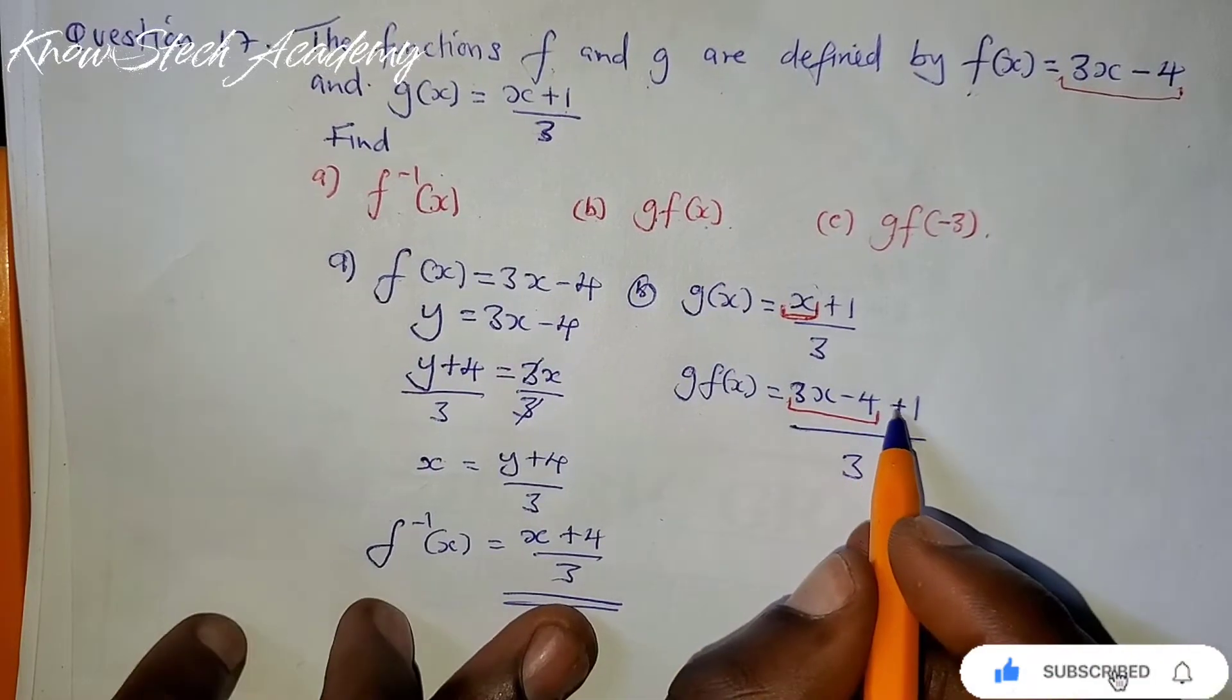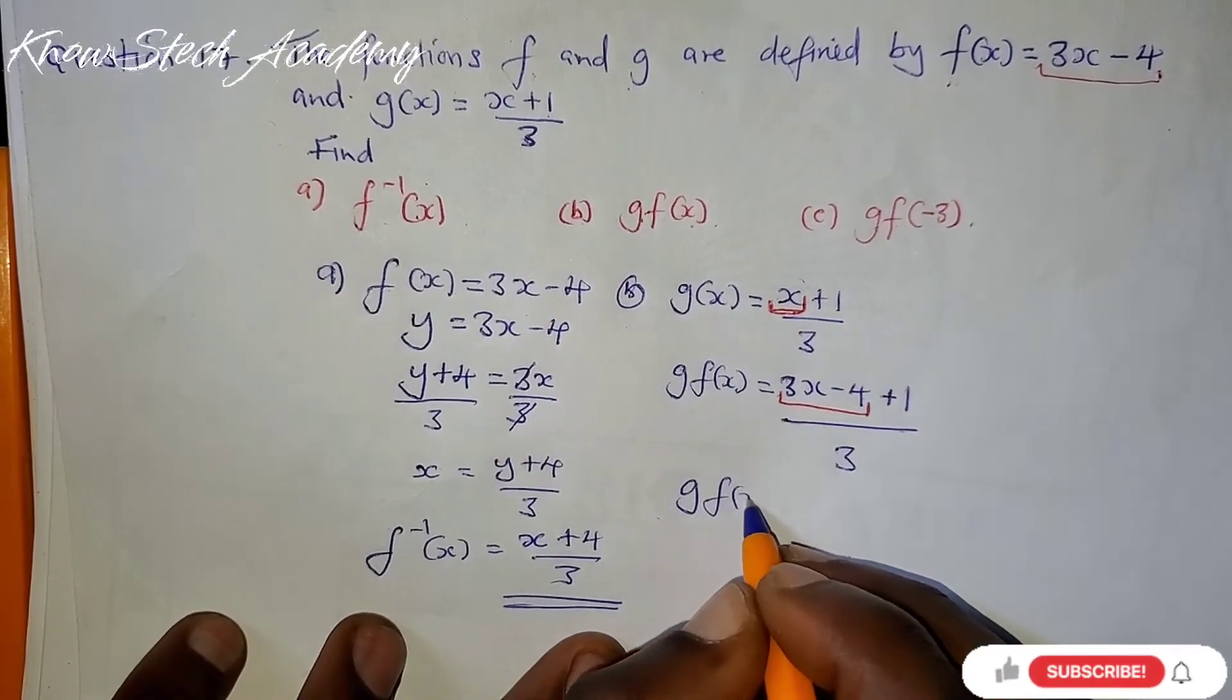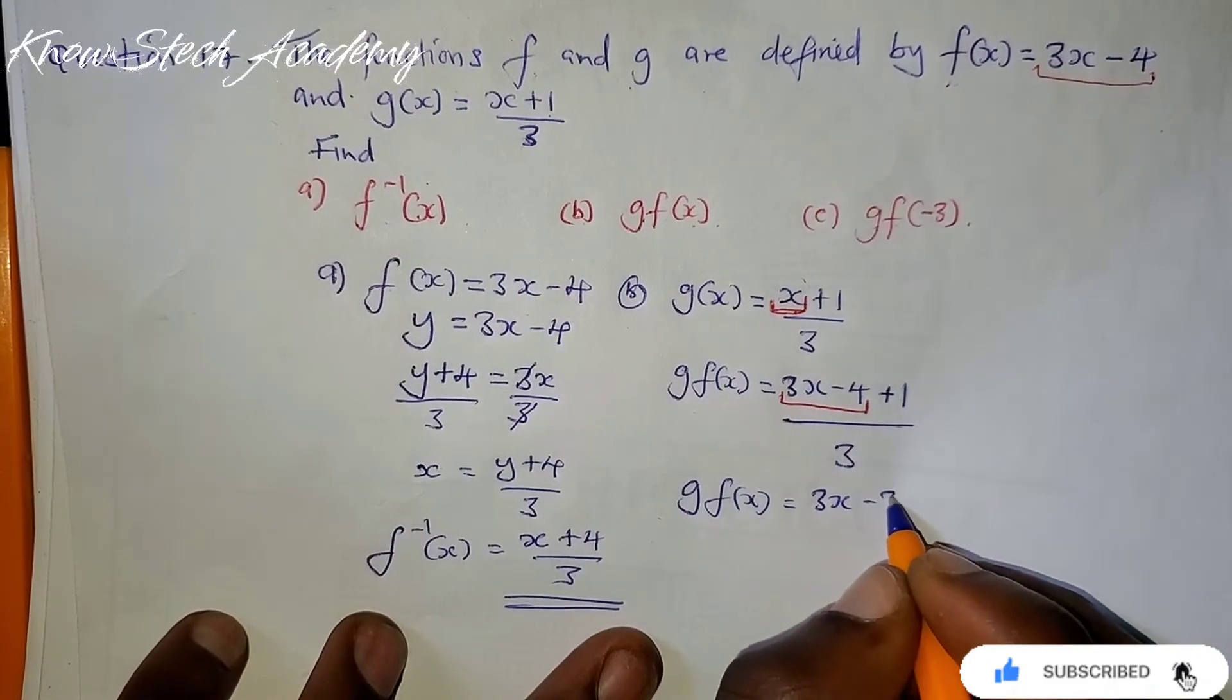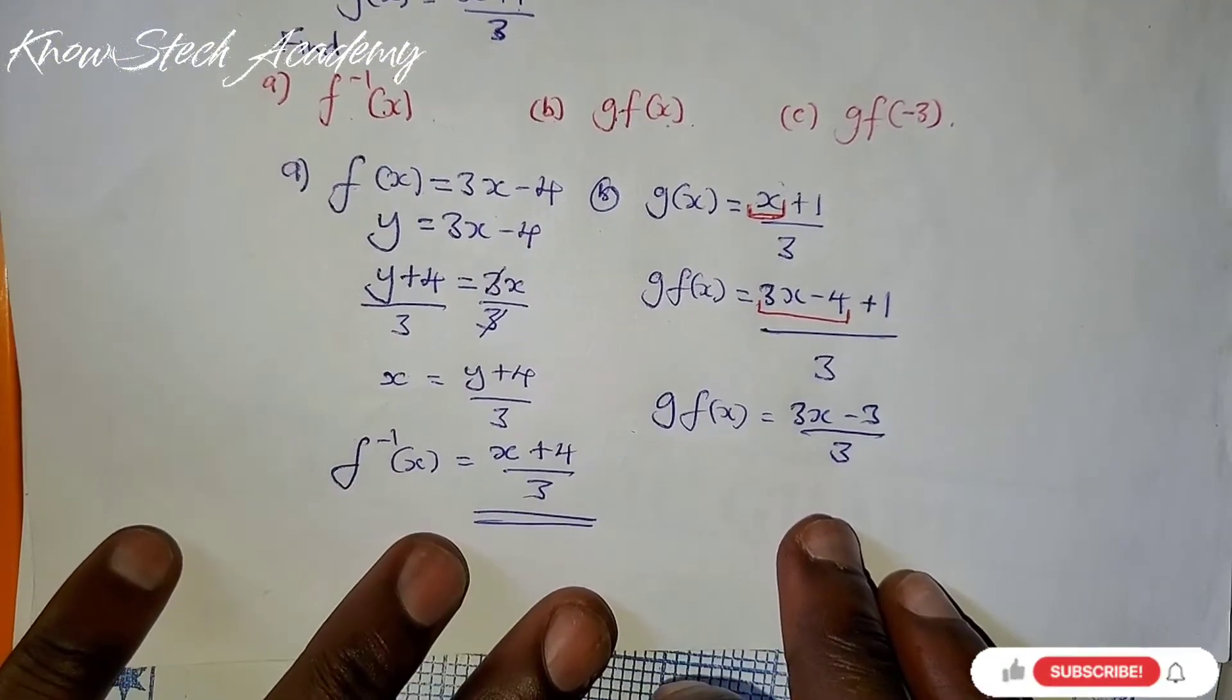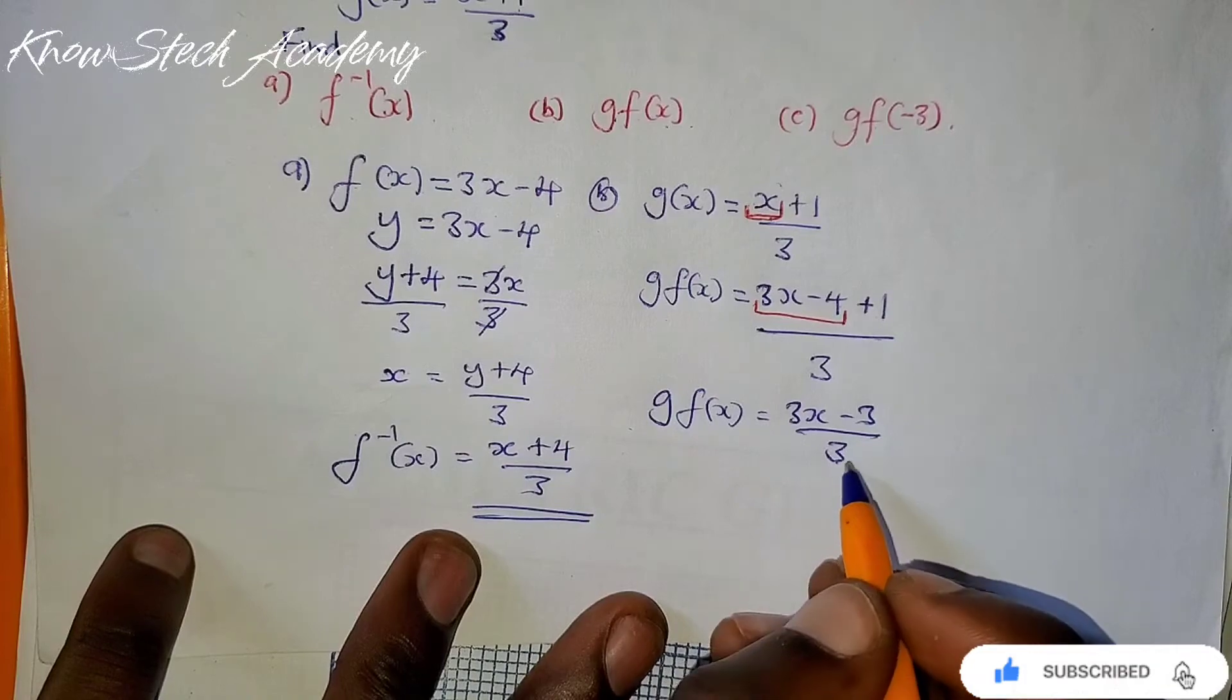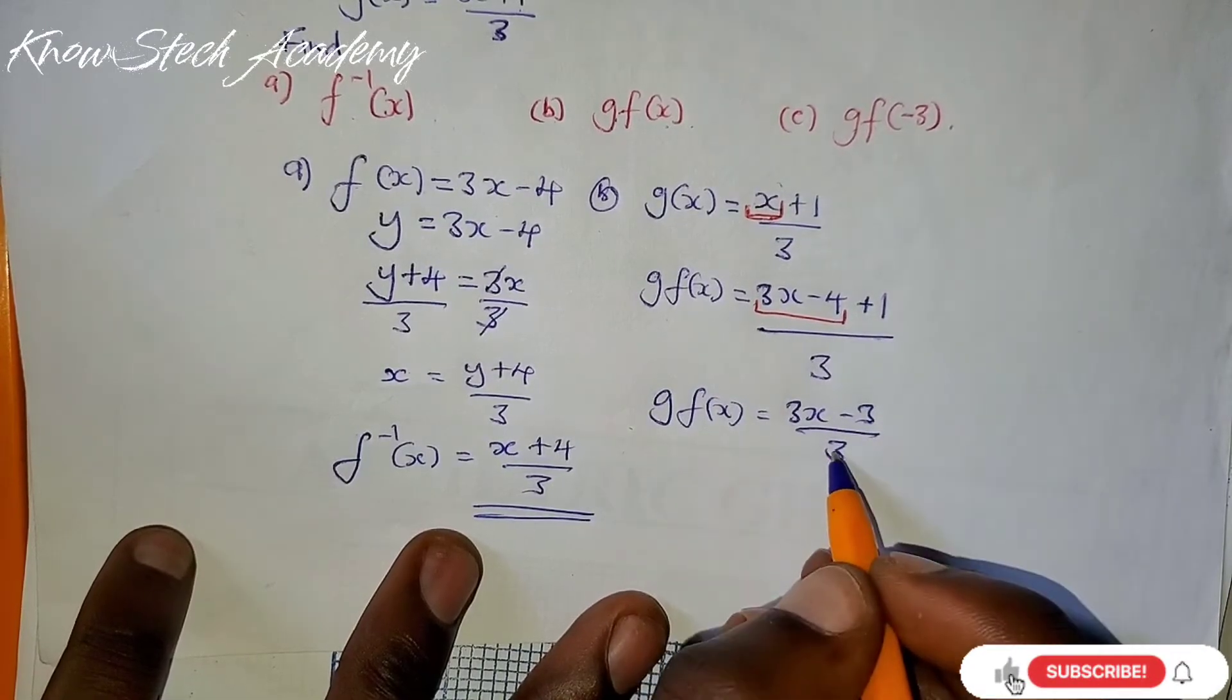Now this one happens that they are like terms on top here. Negative 4 and plus 1, you can add or subtract. So negative 4 plus 1 is negative 3. So you have (3x - 3)/3. Now check this out. If you have a number which can go in all the terms when you are dividing, you can reduce. So 3 can go into 3 and this 3.